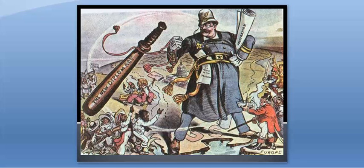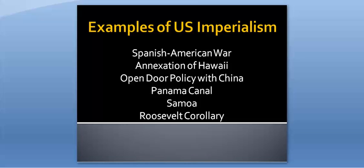Examples of American imperialism at this time include things like the Spanish-American War, the annexation of Hawaii, the open-door policy with China, the building of the Panama Canal, Samoa, and the Roosevelt Corollary to the Monroe Doctrine. I'll go over some of these in more depth later, and we'll also look at these in class.